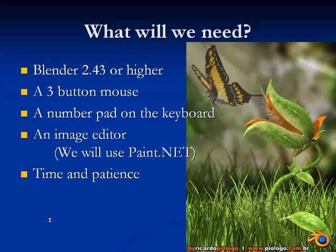For these VTMs, you'll need a few things. A copy of Blender 2.43 or higher is a must. You'll also need both a 3-button mouse and a number pad on your keyboard — navigating the interface is a bit clumsy without these. You'll also need some sort of image editor; we'll use paint.net, a free image editor, but something like Photoshop or GIMP will work just as well. Of course, you'll need a lot of time and patience.